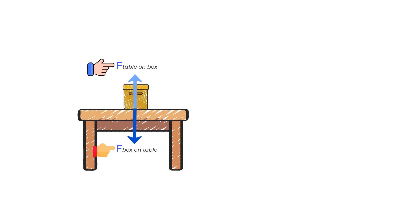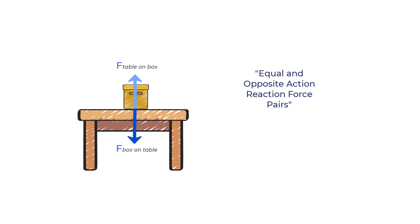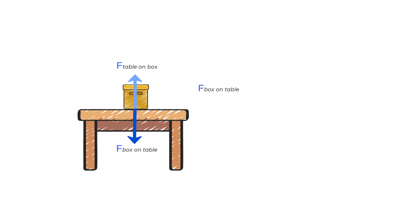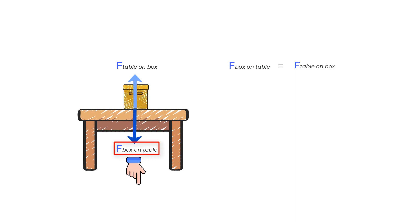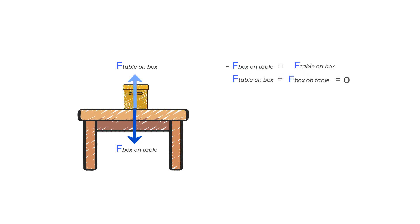These force pairs are termed in a more scholarly way as equal and opposite action-reaction force pairs, or Newton's third law force pairs. So we can say that FBT, the force of box on the table, equals FTB, the force of table on the box, with a negative sign since they act in opposite directions. Bringing both forces to one side gives FTB + FBT = 0, clearly showing the two forces add up to zero.